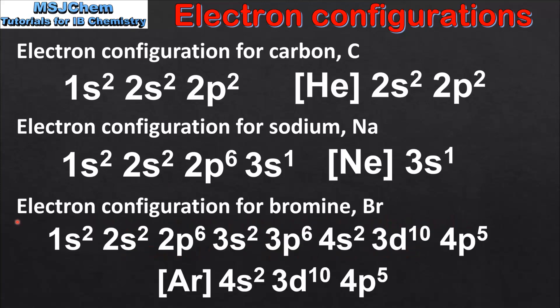The next example is the electron configuration for bromine, which is 1s2, 2s2, 2p6, 3s2, 3p6, 4s2, 3d10, 4p5.